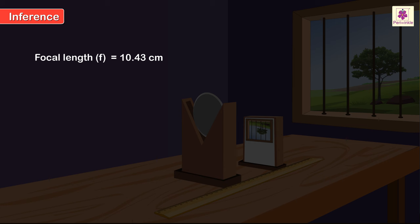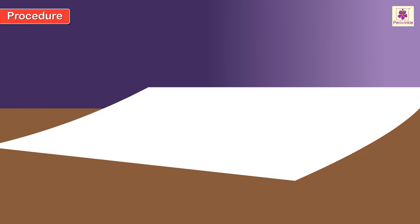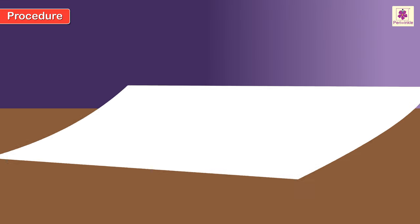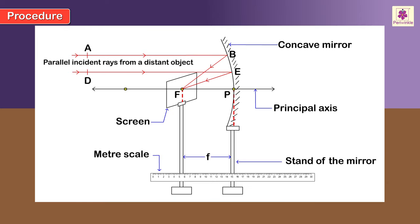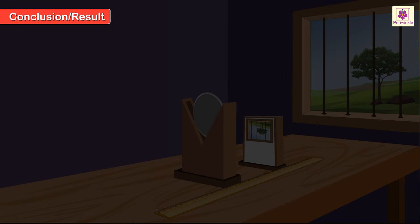Procedure Step 8: Draw a ray diagram. Conclusion or Result: The focal length F of the concave mirror is 10.43 cm.